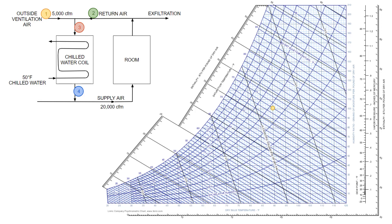State one is the outside air, which we know is 90 degrees dry bulb and 74 degrees wet bulb. If we know any two pieces of information, we can find that point on the psych chart. State two is the return air — we can take the room conditions as being the same as the return air, assuming the duct is well sealed and insulated — so that's 80 degrees dry bulb and 50% relative humidity. State three is a mixture of the outside air and the return air. Since 5,000 CFM of outside air is being introduced, we can assume approximately 5,000 CFM is being removed by exfiltration, leaving about 15,000 CFM to be recirculated as return air.